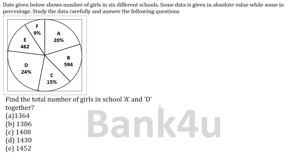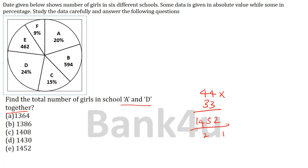Find the total number of girls in school A and D together. School A is 20 percent and school D is 24 percent. So 20 plus 24 = 44 percent. Since 1 percent equals 33, we calculate 33 into 44. That gives 1452. The answer is option A.